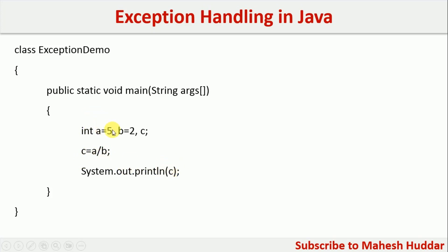If you see the value of a and b: a is 5 and b is 2. 5 divided by 2 is equal to 2.5, but because c is an integer type, c is equal to 2 and 2 will be printed. There will not be any issue in this particular program.